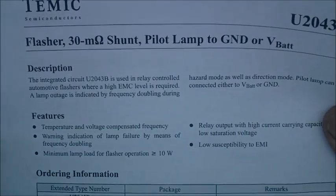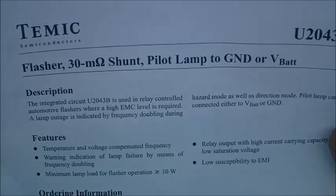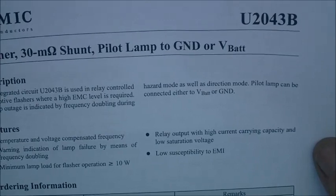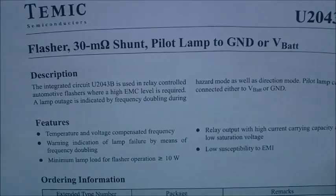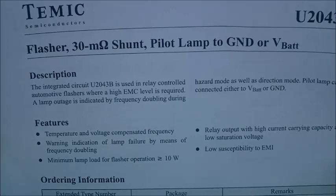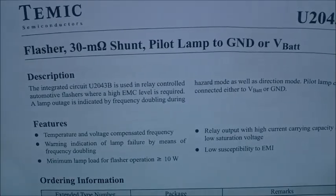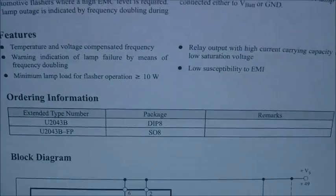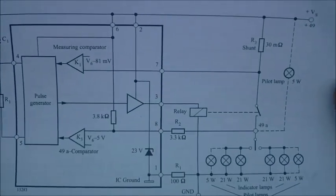Sure enough, our Google search turns up a wealth of information, including this data sheet here from Temmik Semiconductors. You can see it's on the U2043B chip, and they're saying it's a flasher with 30 milliohm shunt, pilot lamp to ground or Vbat. It gives you a description of the unit, lists its features, ordering information, and there's this invaluable circuit diagram.